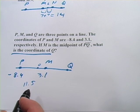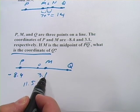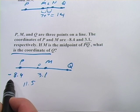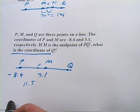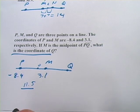Another way you can do this is take your second coordinate and subtract the first coordinate. That will give you the distance. So 3.1 minus a negative 8.4, that would also come out to 11.5.